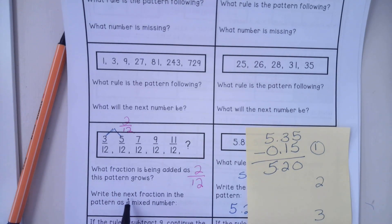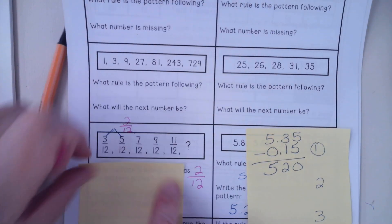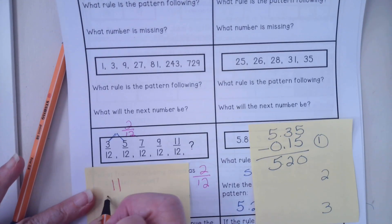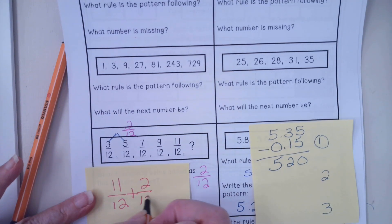It says write the next fraction in the pattern as a mixed number. So if I have 11 12ths, I'm going to put this on a sticky again so it gets nice and clear. If I have 11 12ths and I am adding 2 12ths.